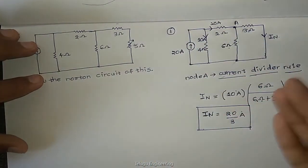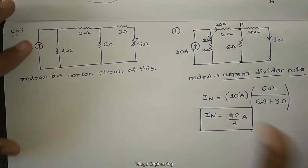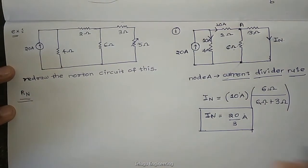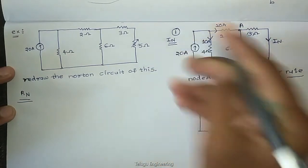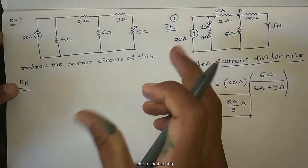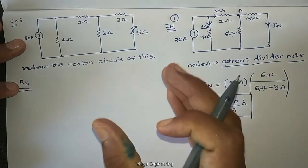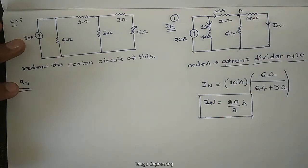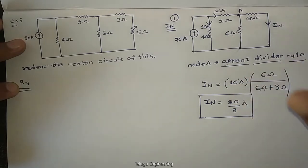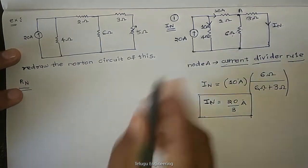Next, our task is to find the Norton resistance Rn. We have found the Norton current. Now for Norton resistance, in the circuit every independent voltage source is short-circuited and every independent current source is open-circuited.